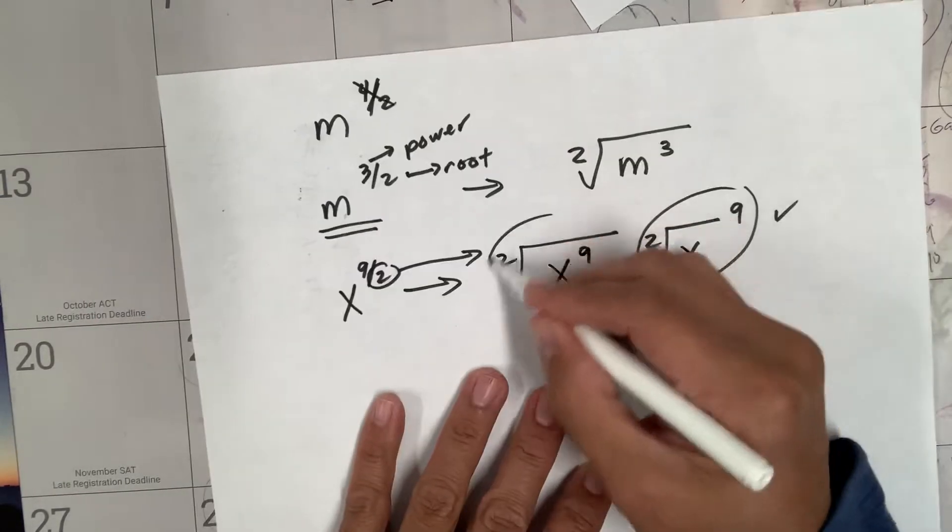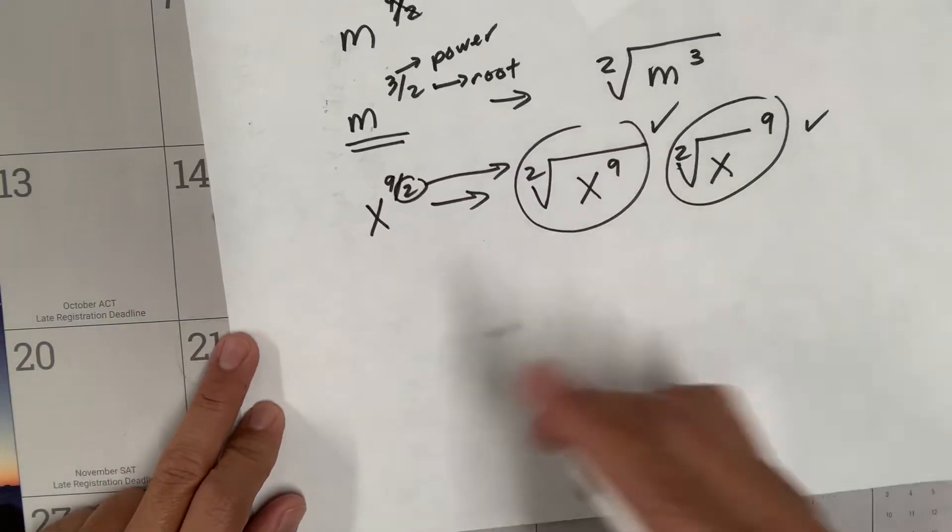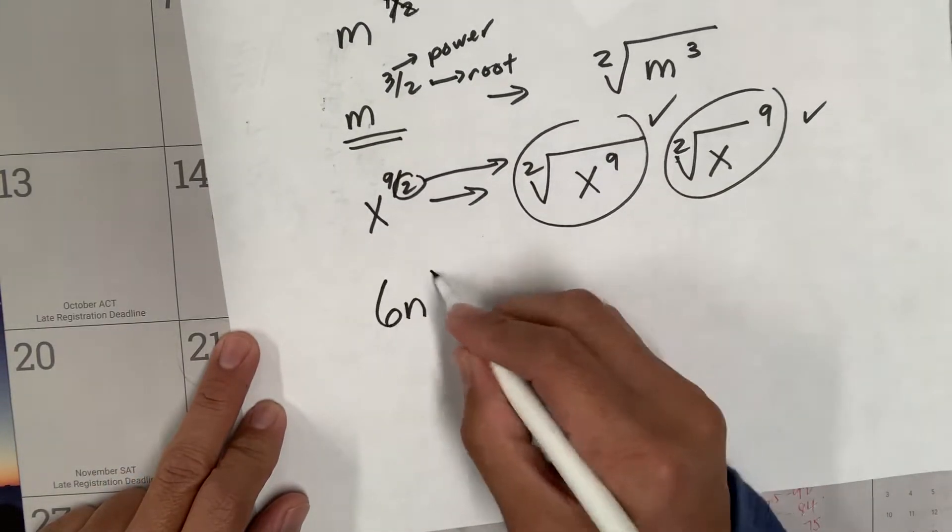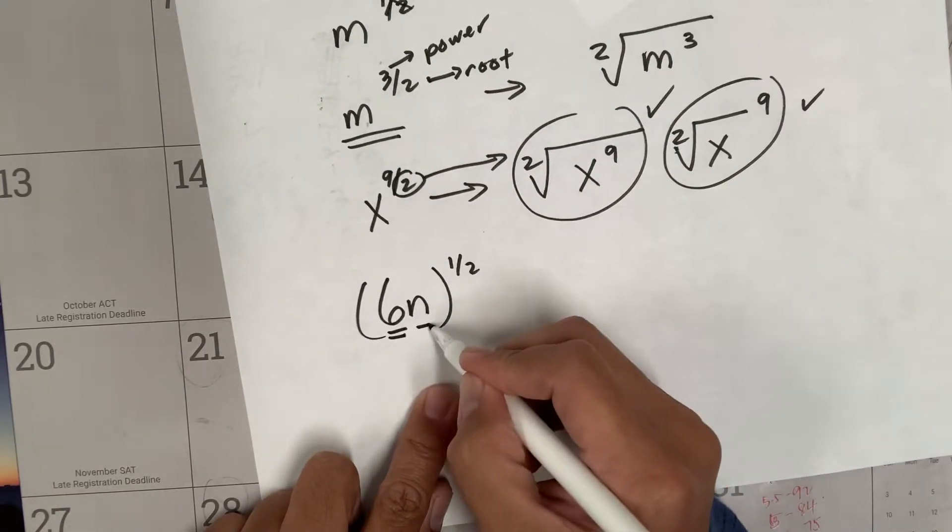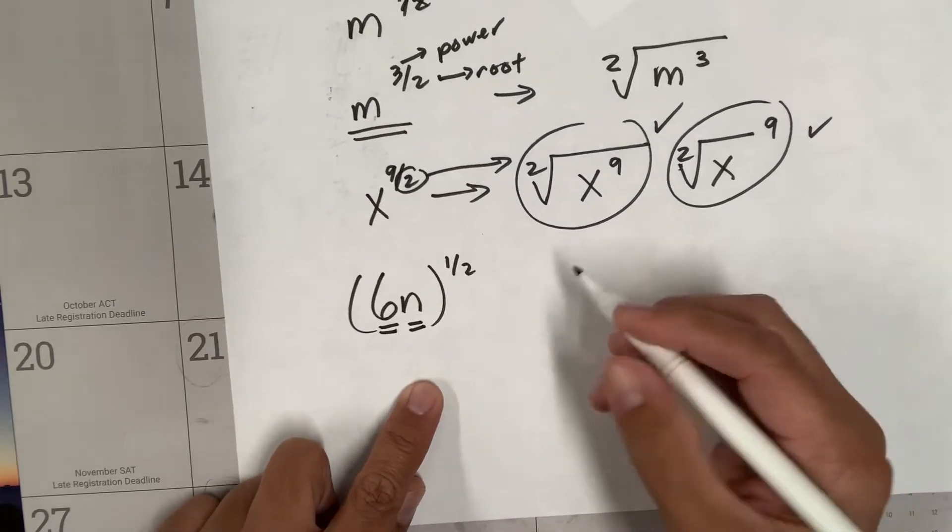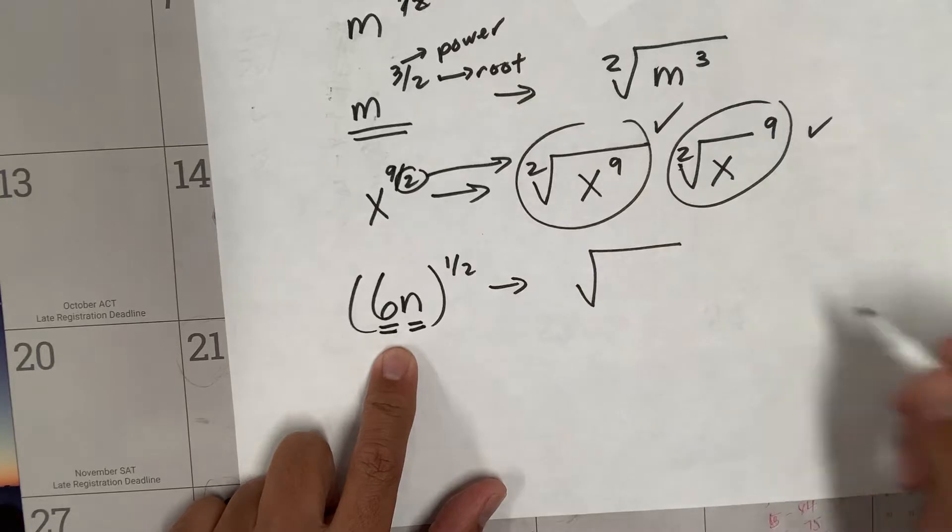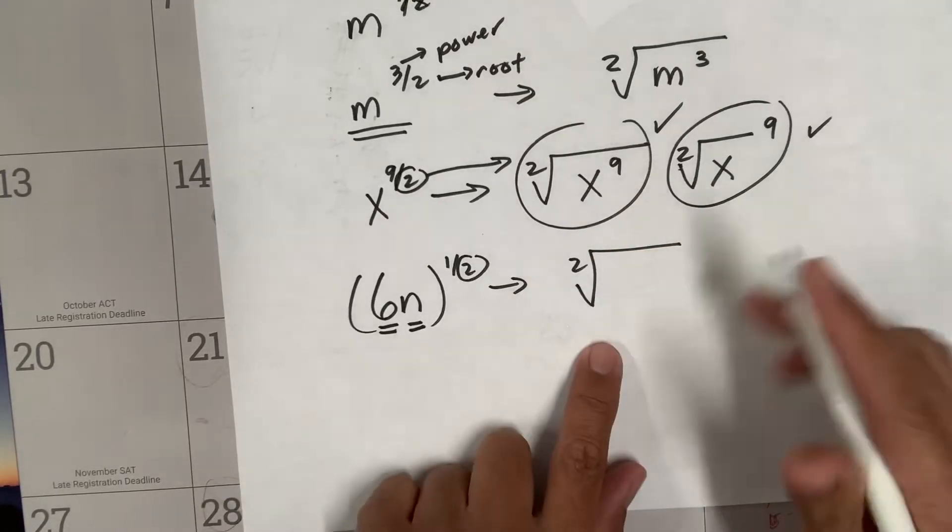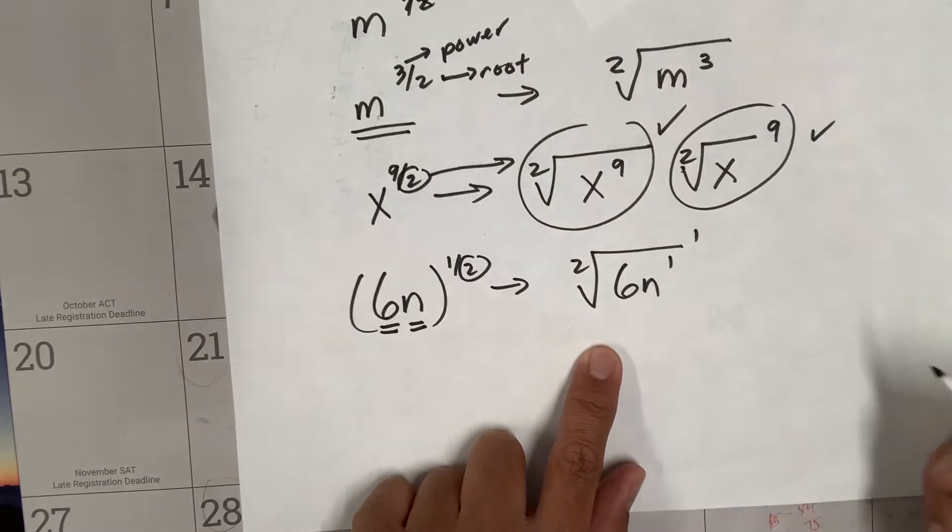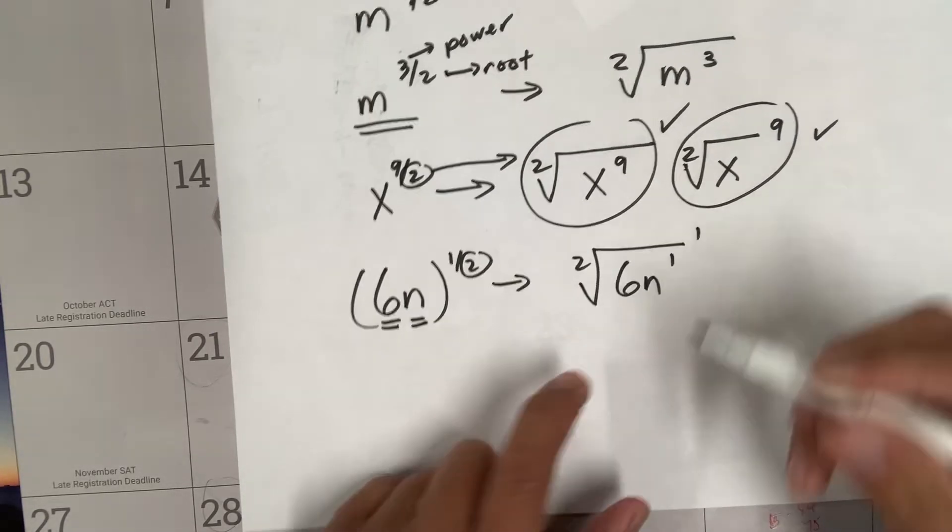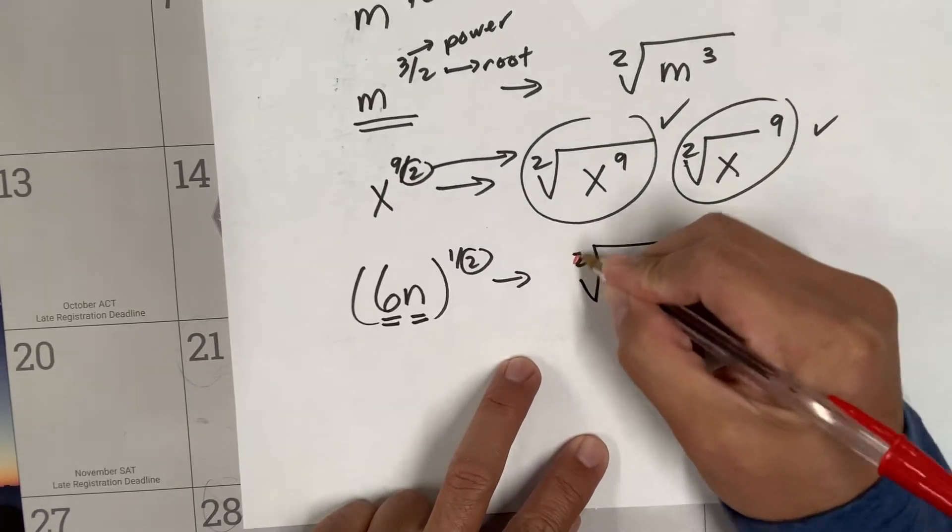What if you're given (6n)^(1/2)? The parenthesis is telling you that there's a coefficient and variable that will go inside the square root. How do we write this one in radical form? Make your square root - this two tells you to put two there - and then 6n. You can put the one here or there, doesn't matter because one is invisible, so you can basically erase this one.